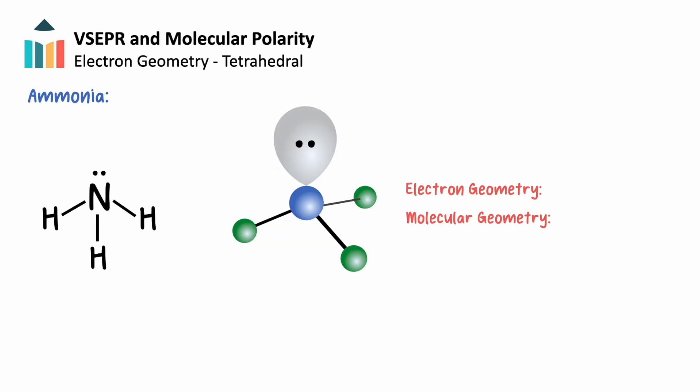Let's look at ammonia next. Ammonia replaces one of our four electron domains with a lone pair of electrons. Notice how the electron geometry remains constant with methane, as they have the same total number of domains. However, the shape of the atoms in the molecule can be described as trigonal pyramidal due to the presence of the lone pair of electrons above nitrogen.